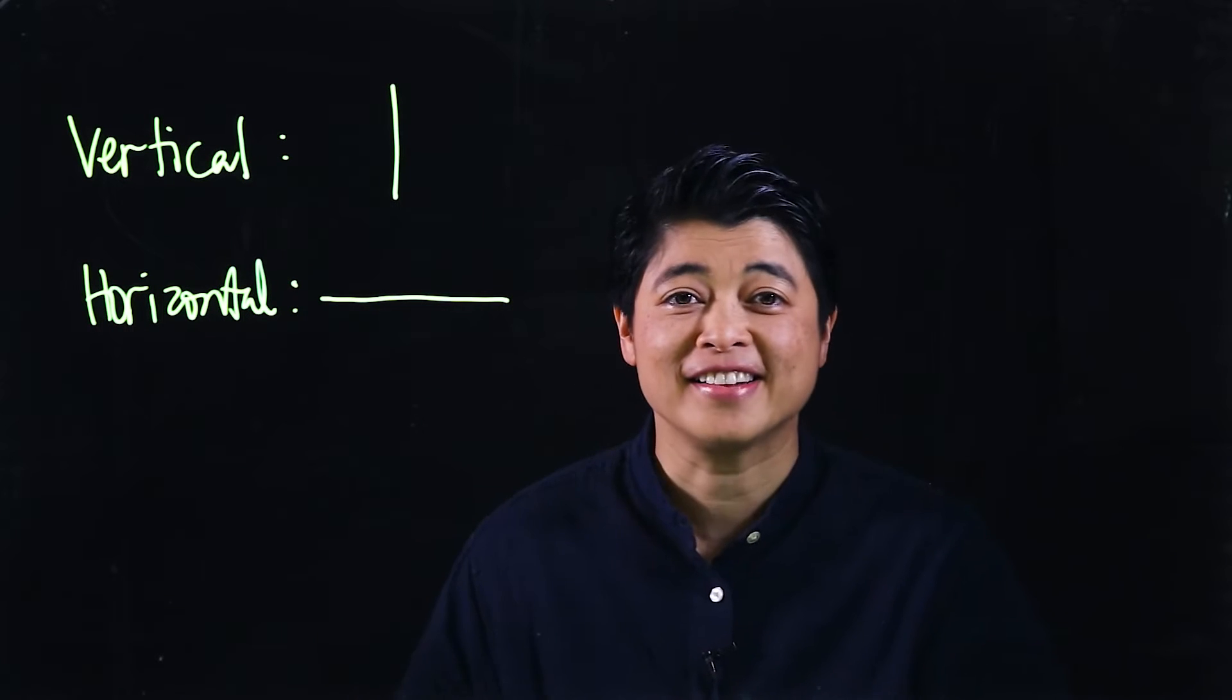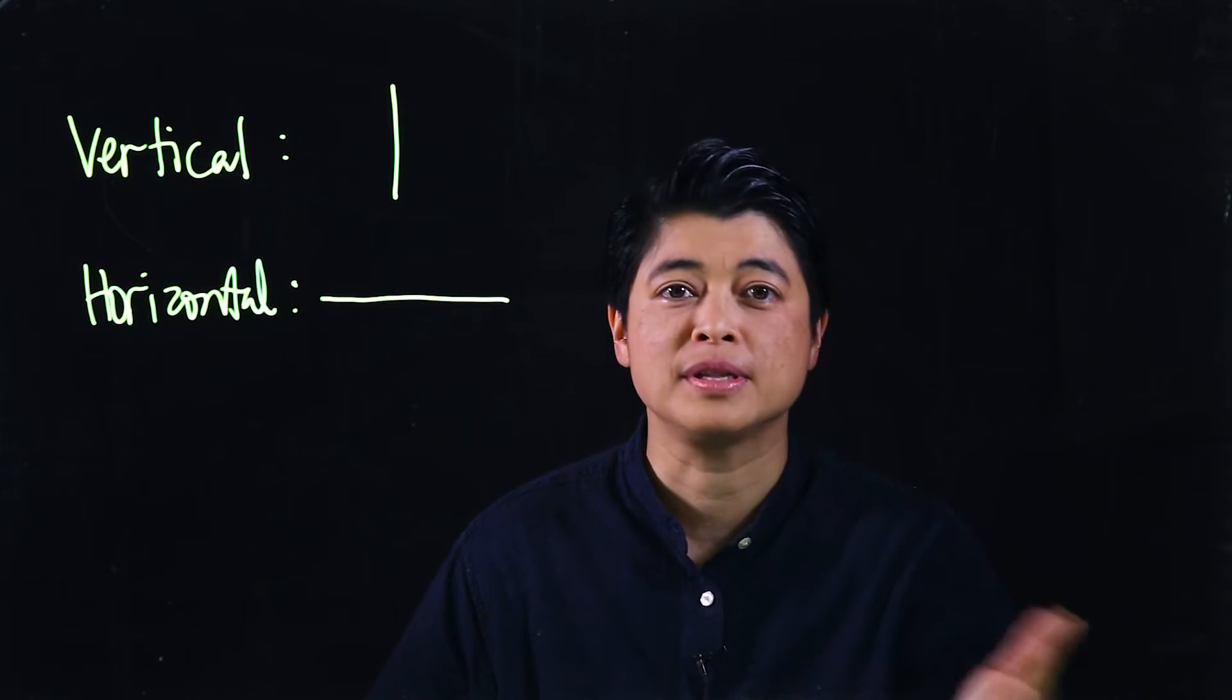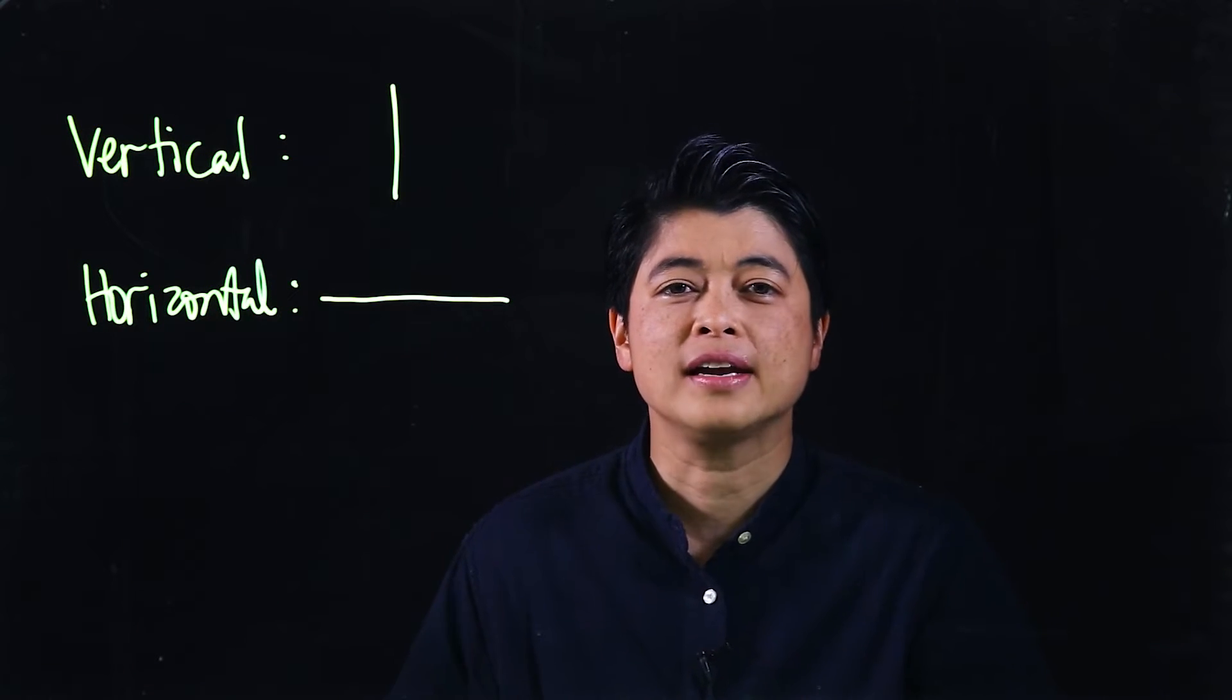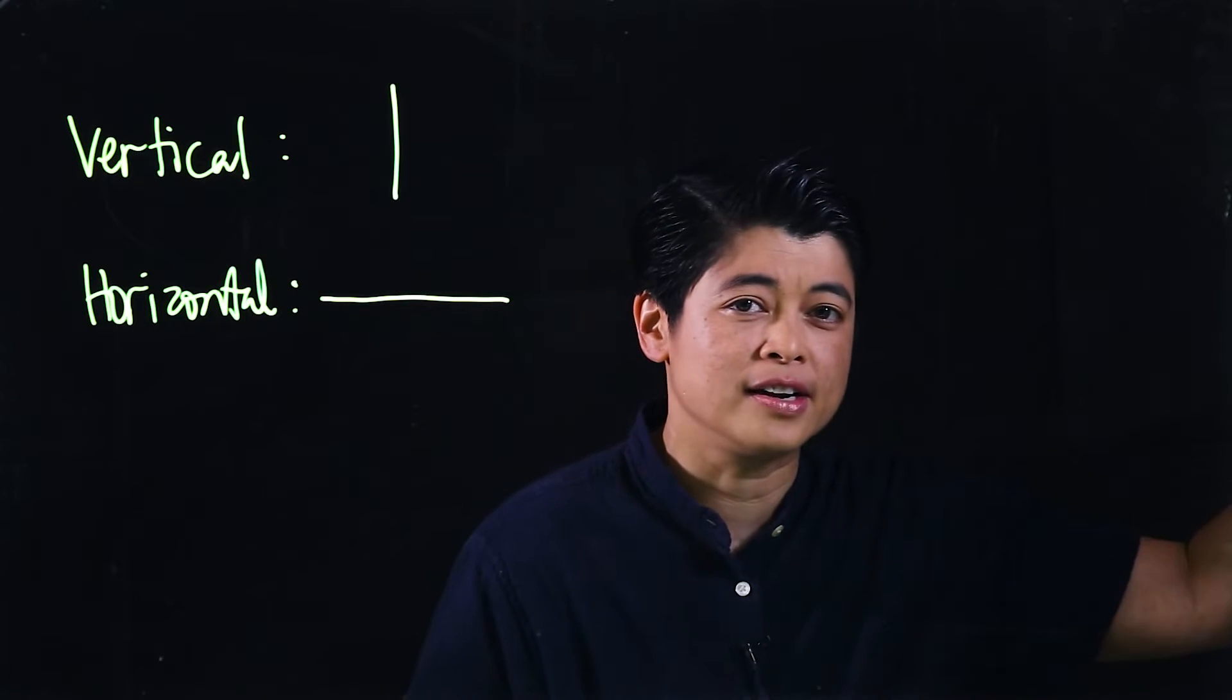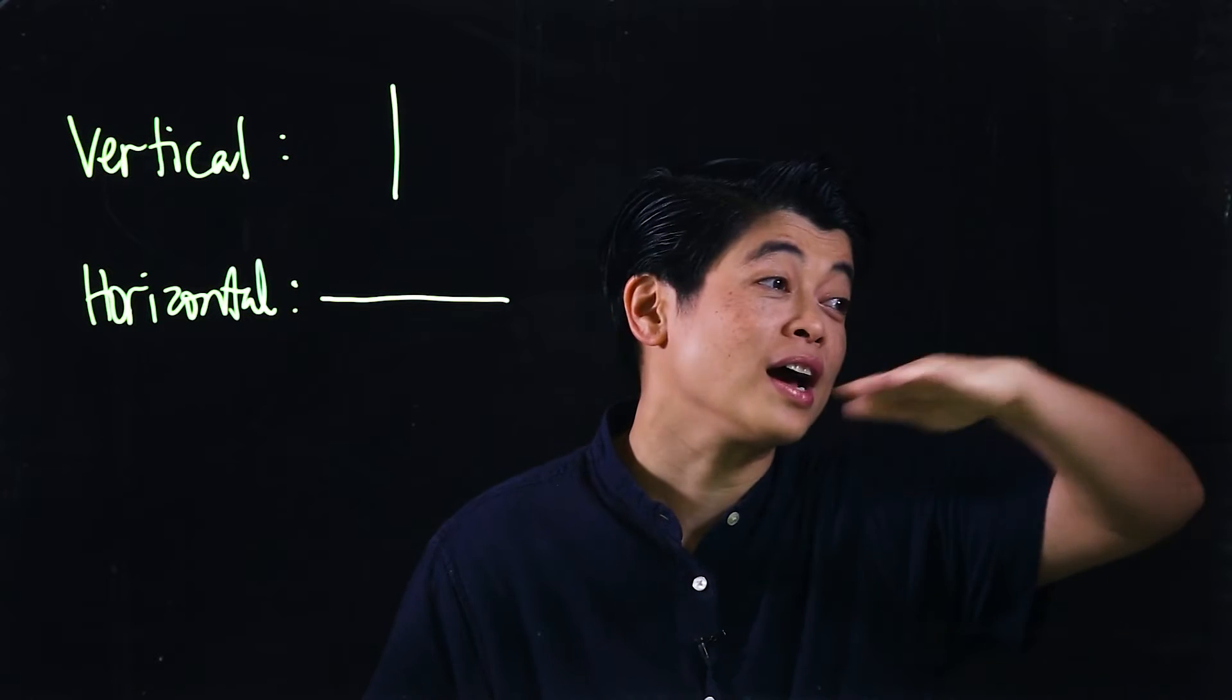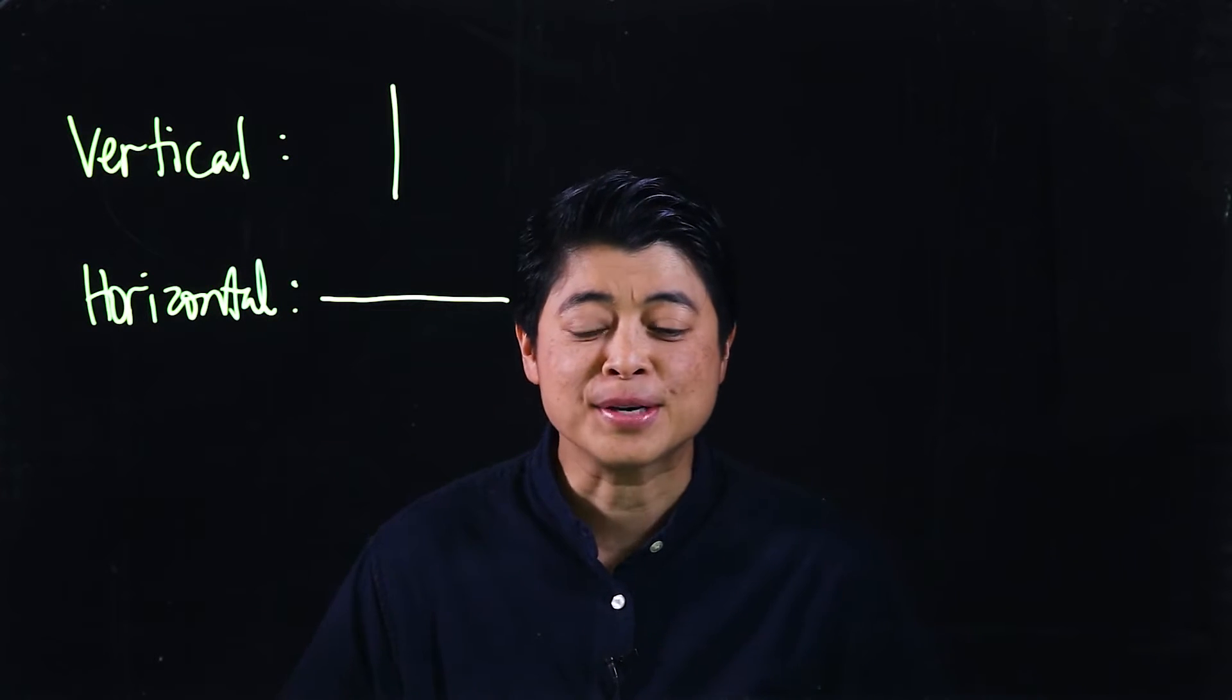When I was a younger child, this was one of the harder things for me to remember - what's the difference between vertical and horizontal? The way that I look at it is if you look at the horizon, that's horizontal. We teach our kids when they look out, that's the horizon, so that's horizontal.